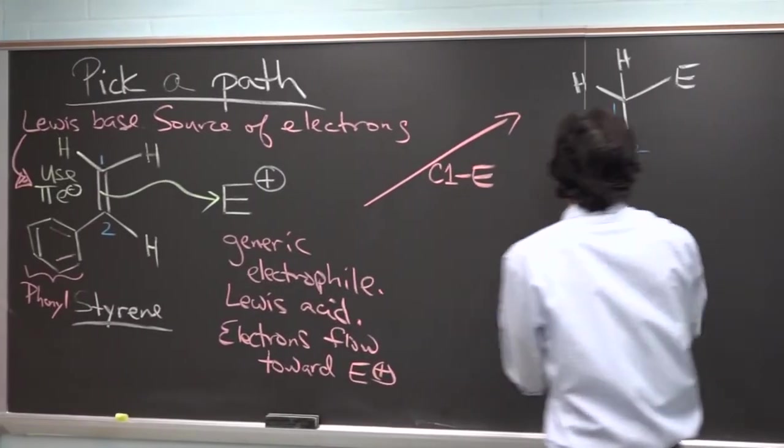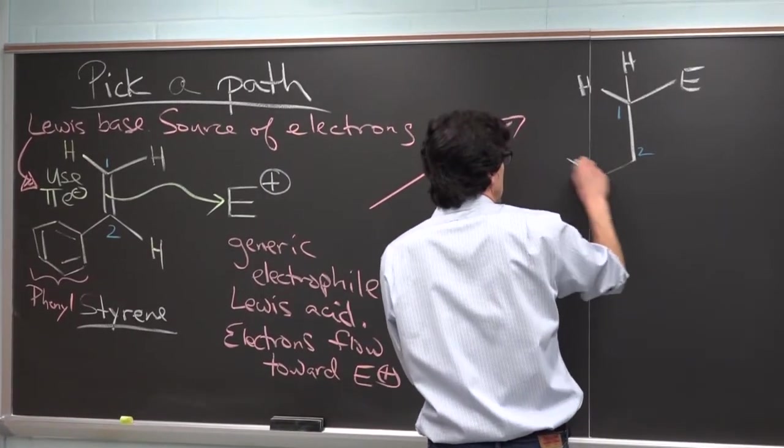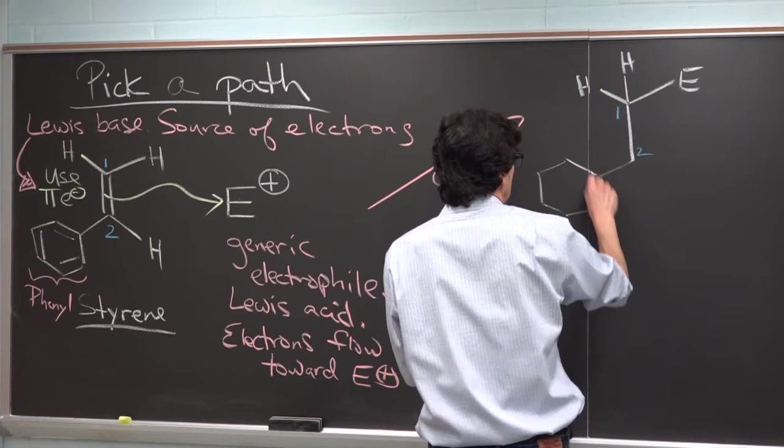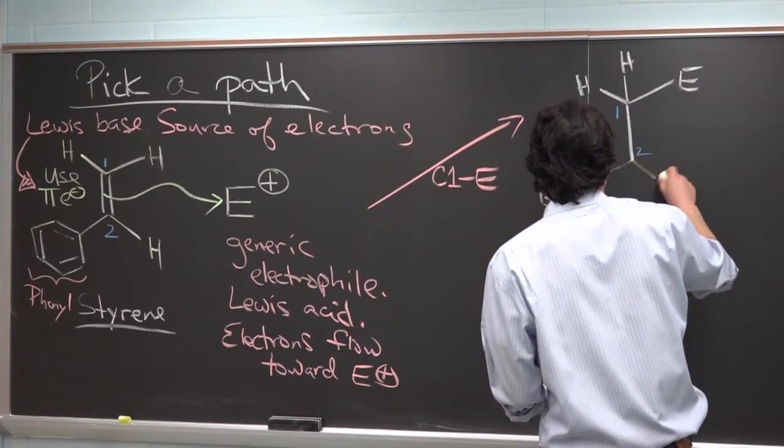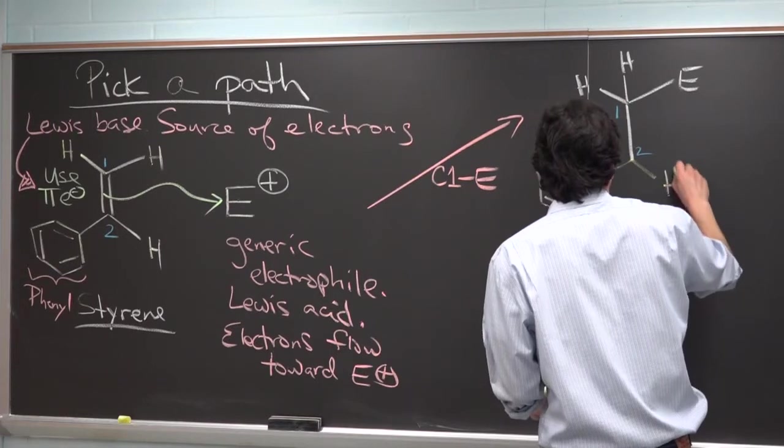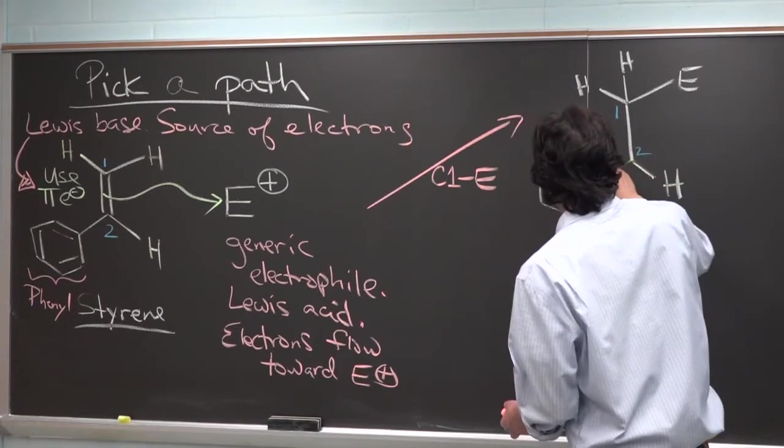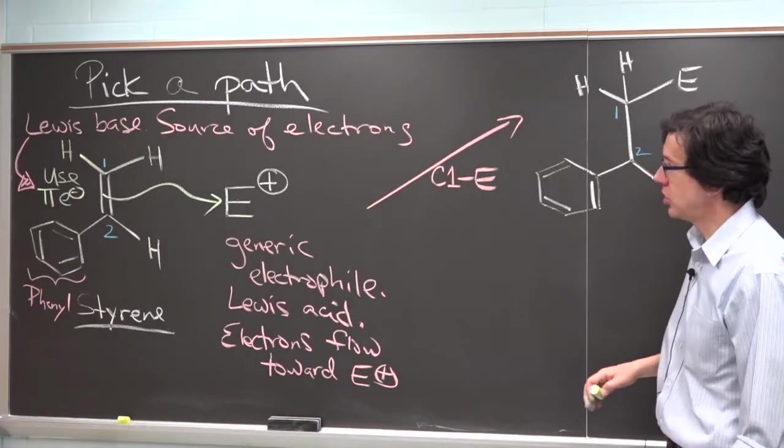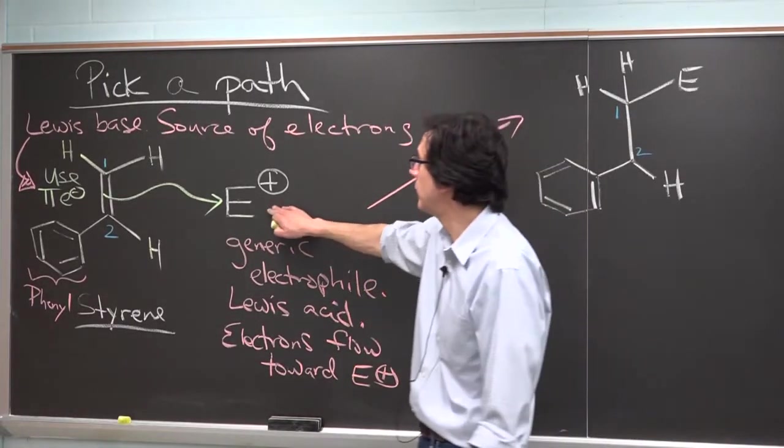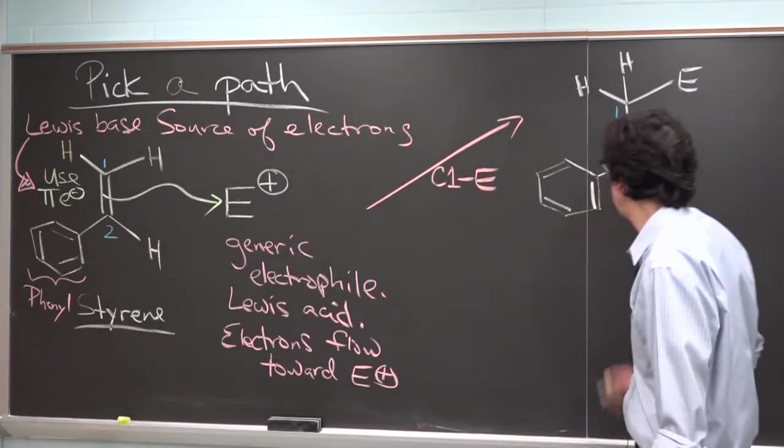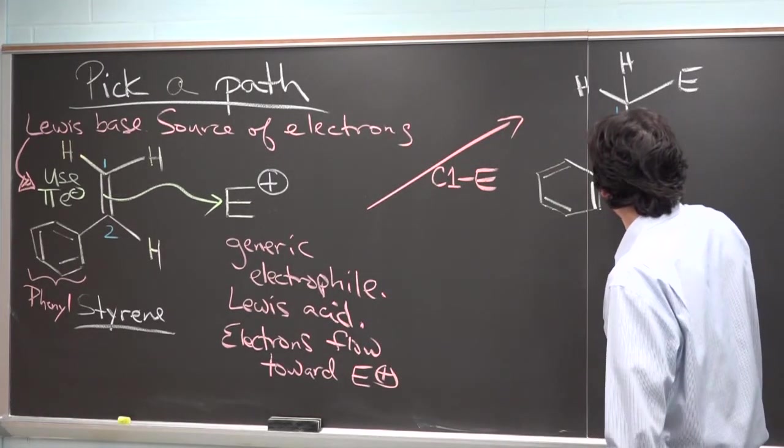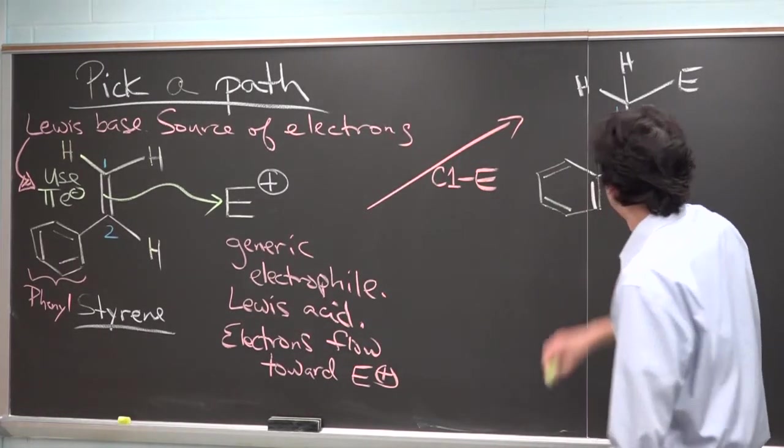On carbon 2 there's going to be a phenyl group there, and carbon 2 also has a hydrogen attached. We need to be sure that we balance charge. We had a positive electrophile and a neutral styrene molecule so there must be a plus charge around here. There it is.